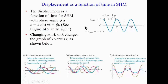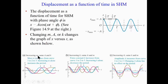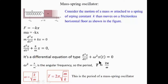From T = 2π√(m/k): increasing mass while keeping amplitude and spring constant fixed increases the period. Increasing the spring constant while keeping amplitude and mass constant decreases the period and increases the frequency. Changing only the amplitude while keeping the spring and mass constant has no effect on the period or frequency — amplitude does not affect period or frequency.